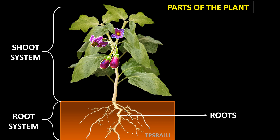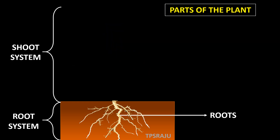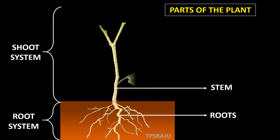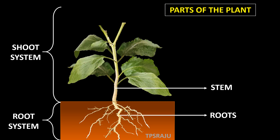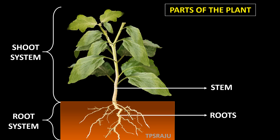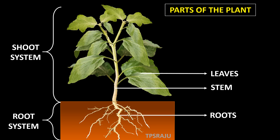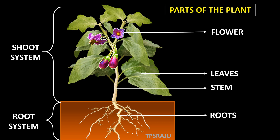What about shoot system? There is a main axis in the shoot system called stem. These green parts are leaves. These are flowers. So, shoot system consists of stem, leaves, flowers, and fruits.